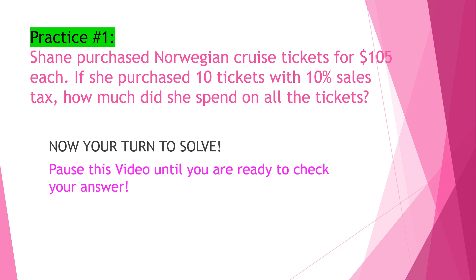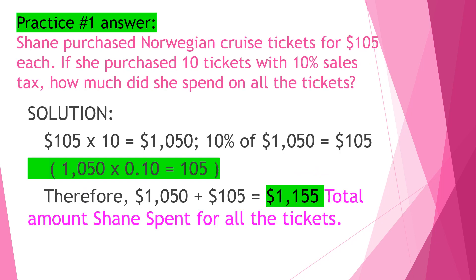Practice number one: Shane purchased Norwegian cruise tickets for $105 each. If she purchased 10 tickets with 10% sales tax, how much did she spend on all the tickets? Now it's your turn to solve — pause this video until you are ready to check your answer. Solution: 105 times 10 is equal to 1050. 10% of 1050 is 105, that is 1050 times 0.10. Therefore 1050 plus 105 is equal to $1155, the total amount Shane spent for all the tickets. I hope you got the correct answer.